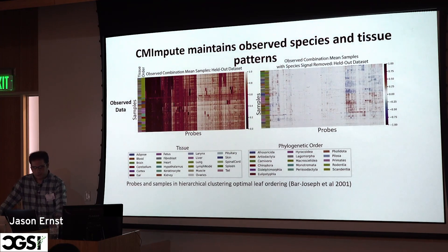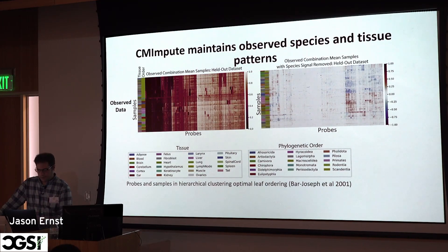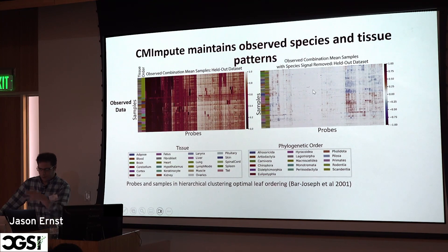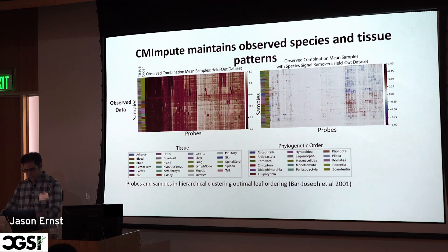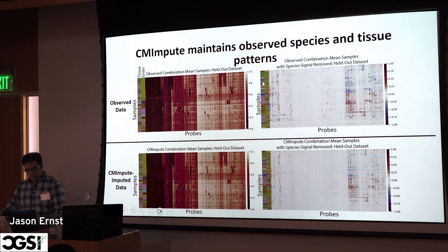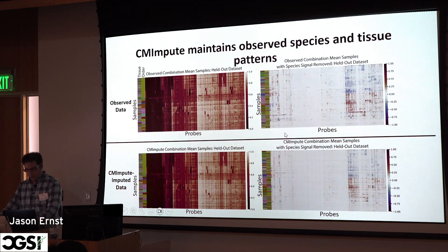Here are a few results. Looking at the observed data clustered by samples and probes (CpGs), and also after regressing out the species-level signal to show just the tissue-level residual, we can compare to our CM-Impute predictions held out in cross-validation. Visually there is very strong agreement, both on the original data and after regressing out species-level signals — we're capturing a lot of the higher-level information.